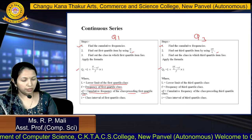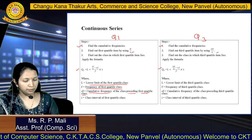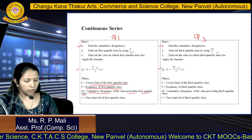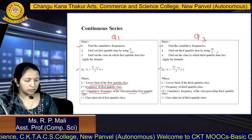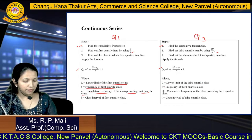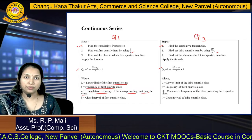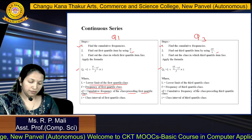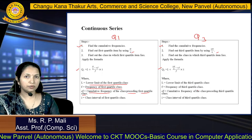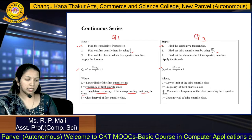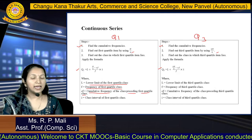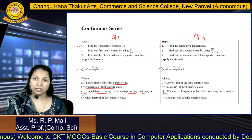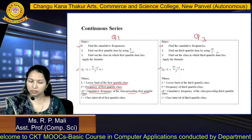This is the formula for Q3. L is again the lower class limit of the third quartile class. F is the frequency of the third quartile class. Cf is the cumulative frequency of the class preceding the third quartile class. And I is the class interval of the third quartile class.